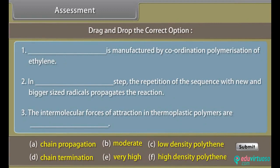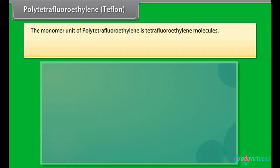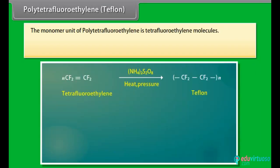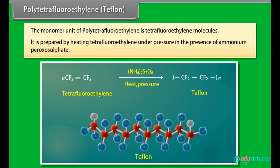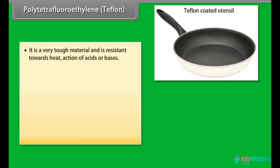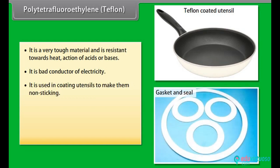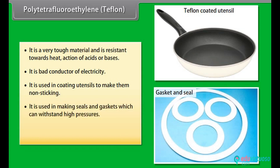Assessment: before proceeding further, let us know how much you have learned. Poly-tetrafluoroethylene (Teflon): the monomer unit of poly-tetrafluoroethylene is tetrafluoroethylene. It is prepared by heating tetrafluoroethylene under pressure in the presence of ammonium peroxosulfate. It is a very tough material and is resistant towards heat and the action of acids or bases. It is a bad conductor of electricity. It is used in coating utensils to make them non-sticking, in making seals and gaskets which can withstand high pressures, and as insulation for high-frequency electrical installations.